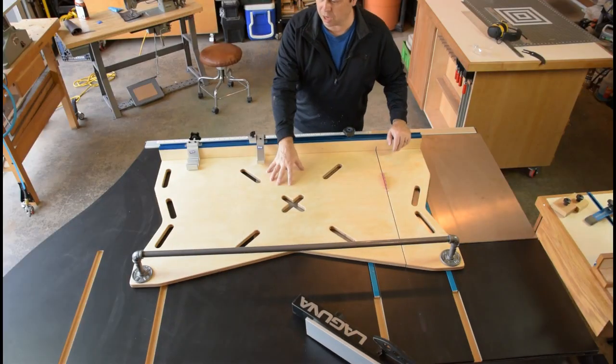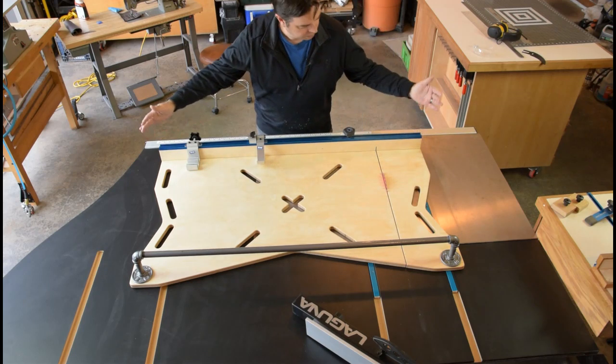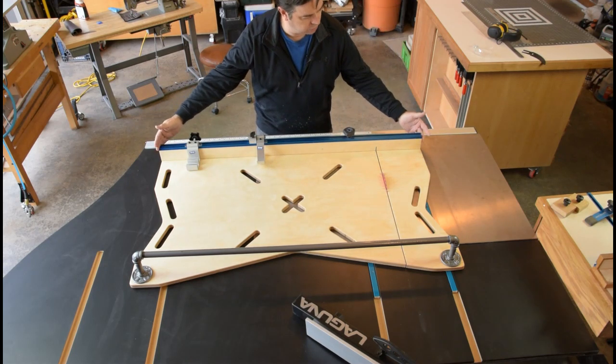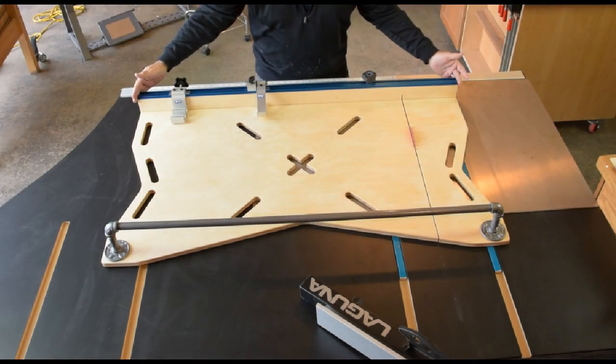So here are some of the keys to the X-Cut Cross-Cut Sled. You need a four-foot continuous length of Craig Chop Track.